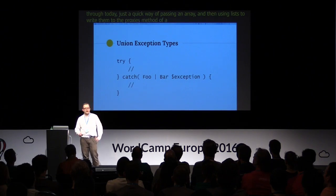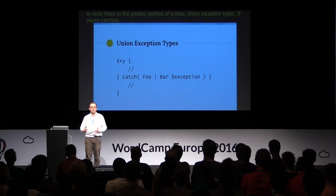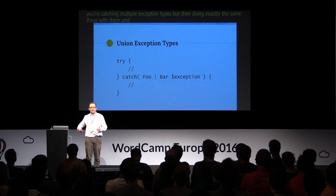Union exception types: if you are catching multiple exception types and then doing exactly the same thing with them, in PHP 5 you had to copy and paste the code into different catch blocks. With PHP 7, you can catch multiple exception types using the union operator.